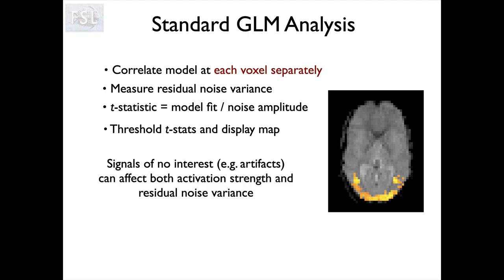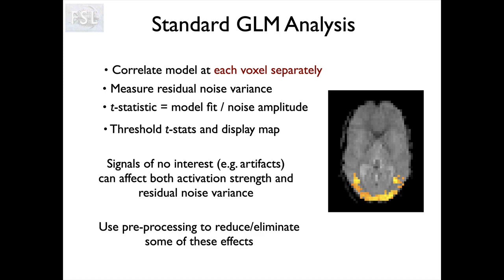Signals of no interest or artefacts can affect both the activation strength and the residual noise depending on their timing and character, causing problems in the standard GLM analysis because they're always present in the data. We're always going to have some level of noise and some level of artefacts in the data we acquire. So we go through a whole bunch of pre-processing steps in order to reduce or eliminate as many of these effects as we can. That's what we're going to talk about in one of the next videos on pre-processing for task fMRI — eliminating all the other structured signals which are different from the neuronal activation signal, the BOLD effect predicted response, and just straightforward white noise that is always going to be present.